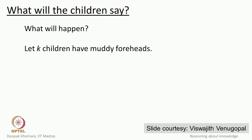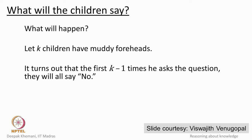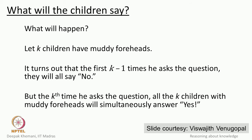If k children have got muddy foreheads, it turns out that for the first k minus 1 times the father asks the question, all the children will reply 'no.' But the k-th time he asks, all the children with muddy foreheads will simultaneously answer 'yes.' This is similar to the situation where you have two numbers and after a series of answers you prune the set of possible worlds until you are certain enough to answer yes.